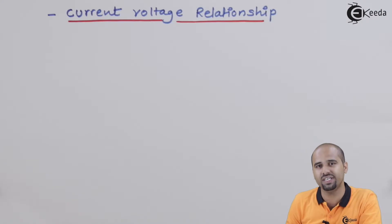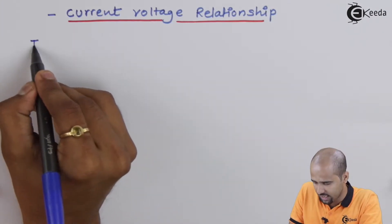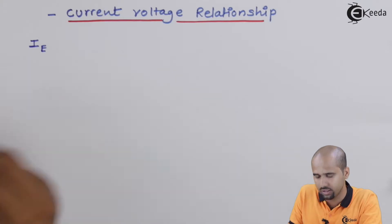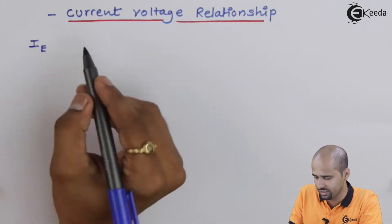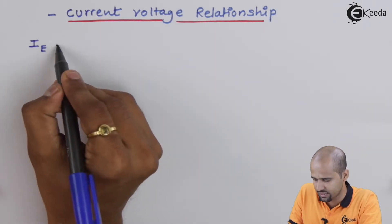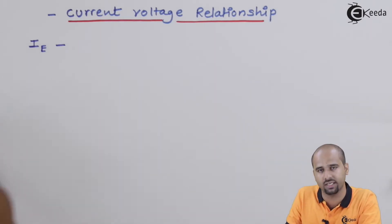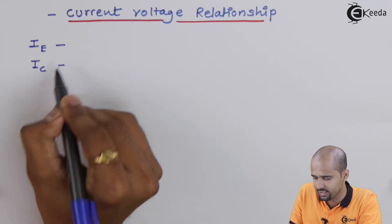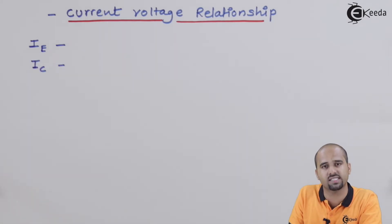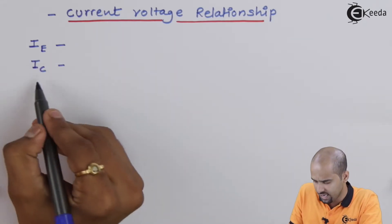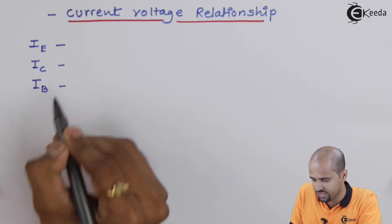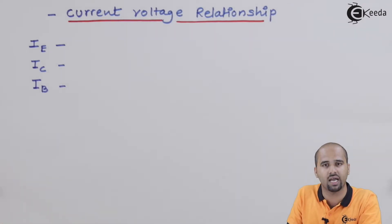As far as BJT is concerned, I know that there are three currents. One is emitter current, expressed as IE; one is collector current, expressed as IC; and another is base current, expressed as IB.